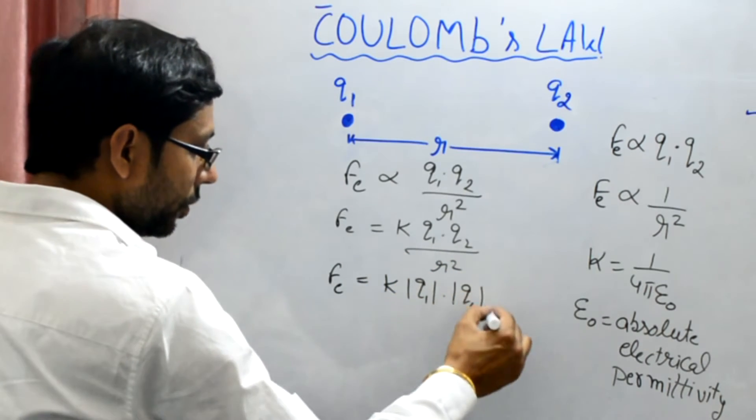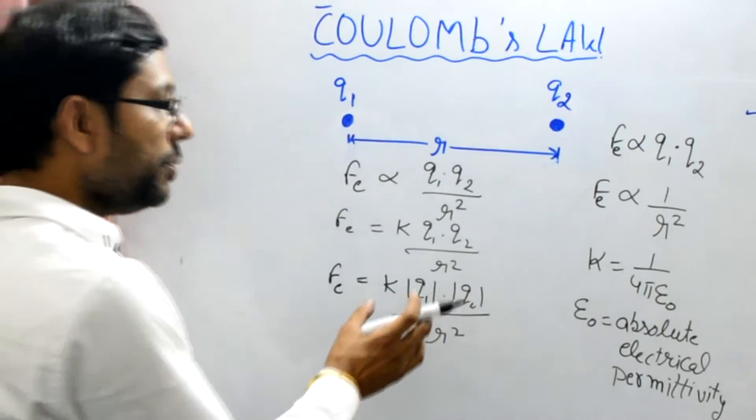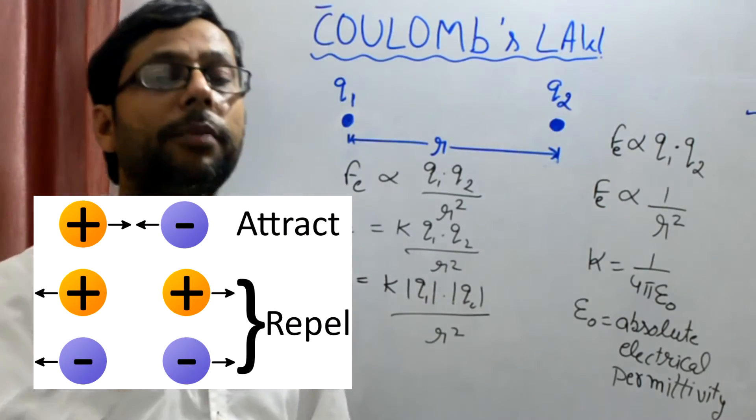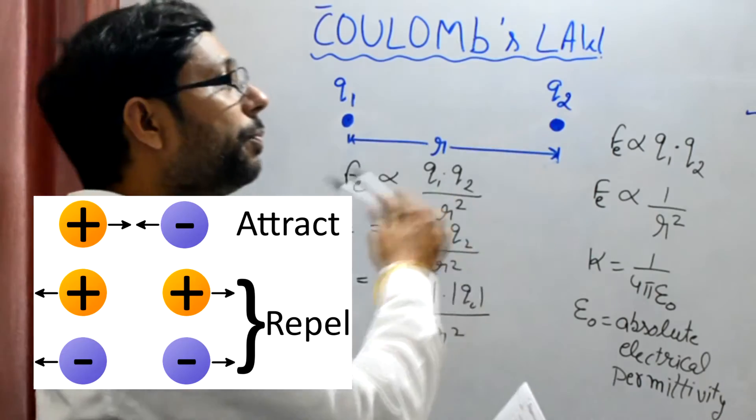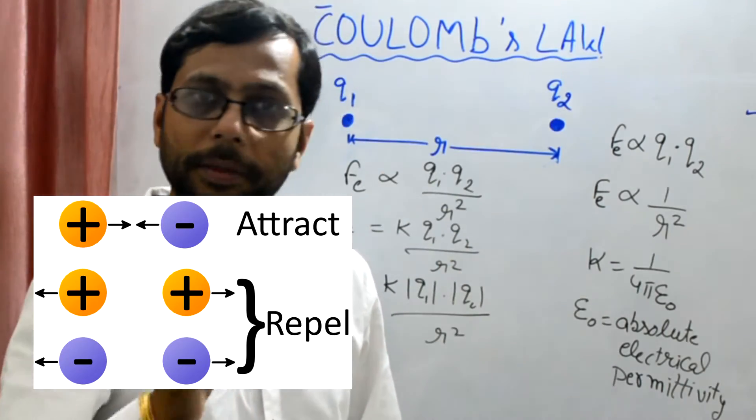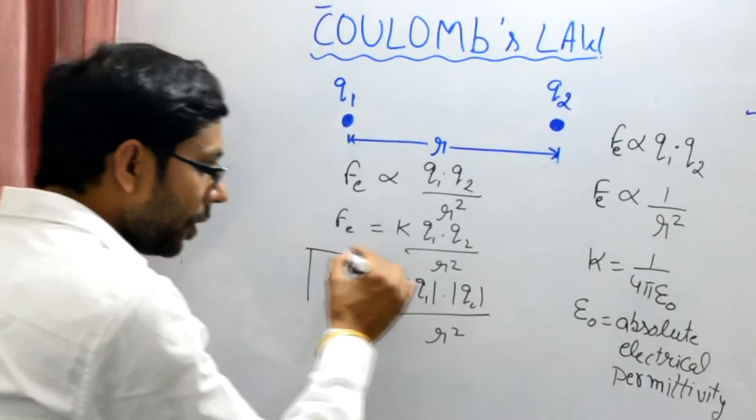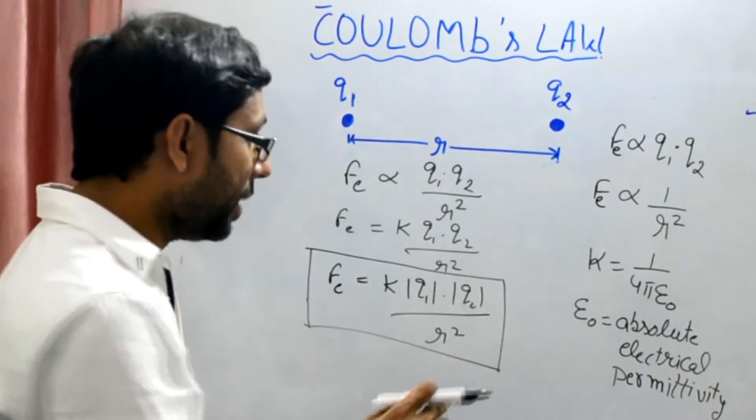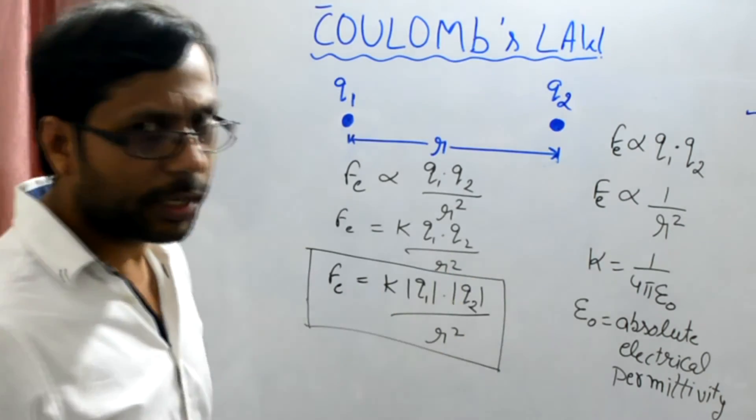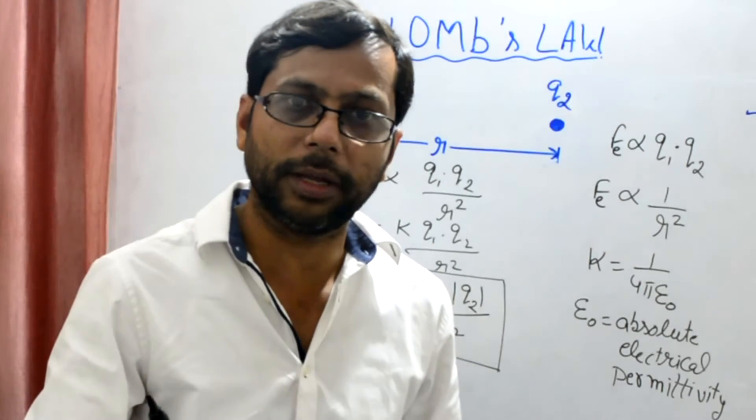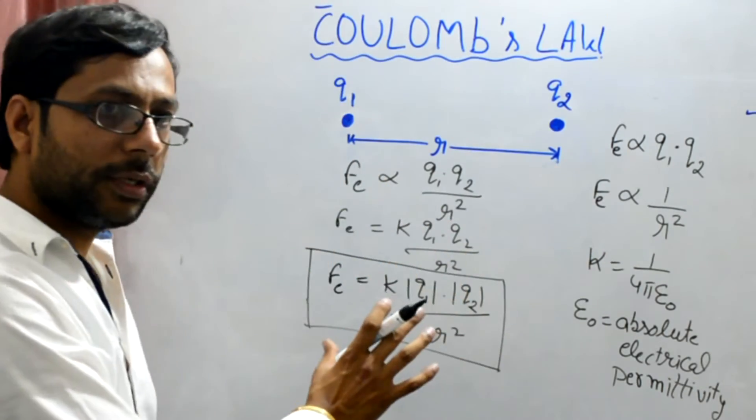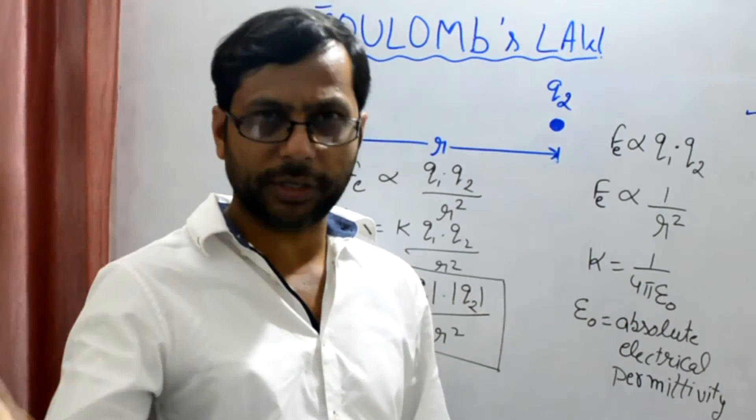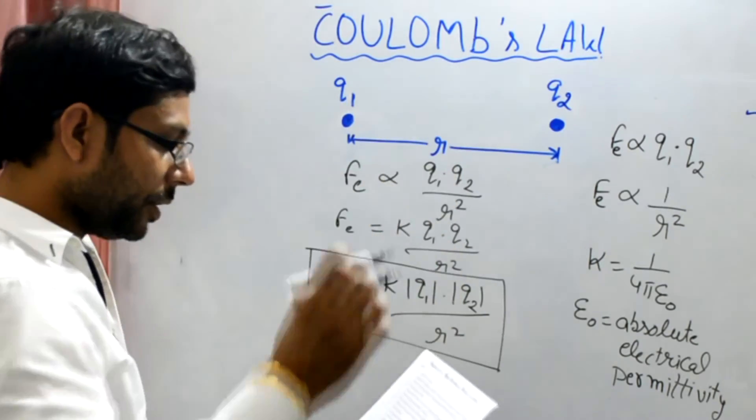Q1, Q2 upon r squared. As we have discussed in the previous video, these charges can be positive or negative. This can be plus or minus. But in this formula, by using that modulus sign, it means that we are just interested in the force. Force can be attractive, force can be repulsive. That is a different study. We are just considering Coulomb's law.